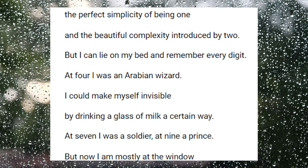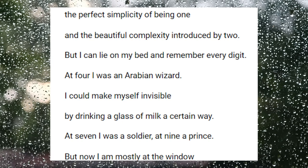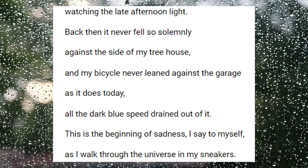But I can lie on my bed and remember every digit. At four, I was an Arabian wizard. I can make myself invisible by drinking a glass of milk a certain way. At seven, I was a soldier. At nine, a prince. But now I am mostly at the window, watching the late afternoon light. Back then, it never felt so solemnly against the side of my tree house, and my bicycle never leaned against the garage as it does today. All the dark blue speed drained out of it.